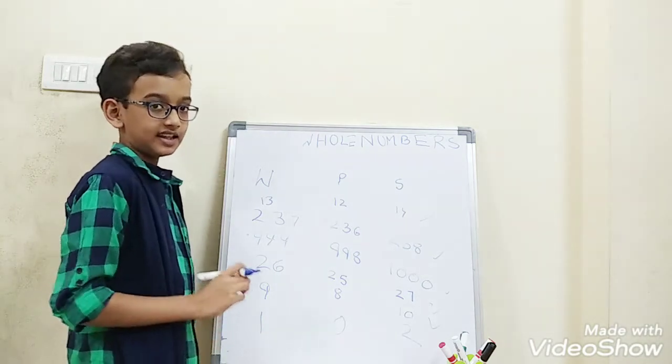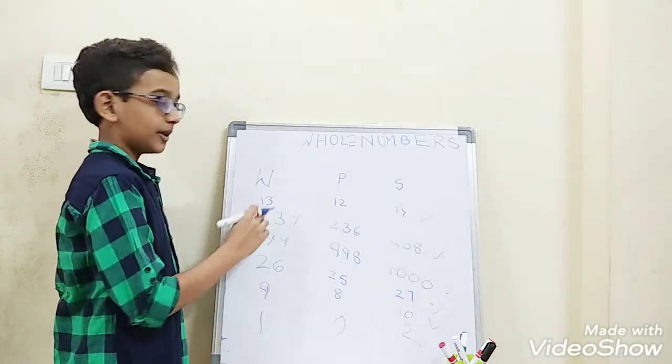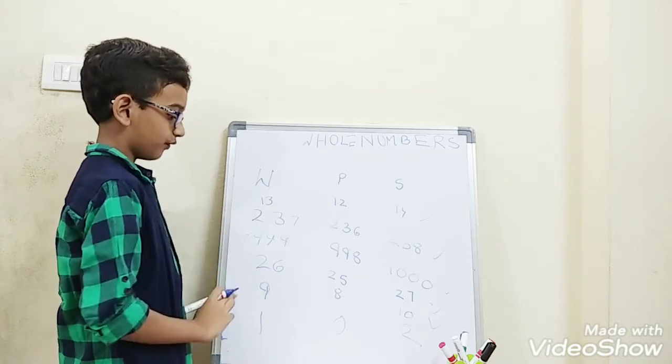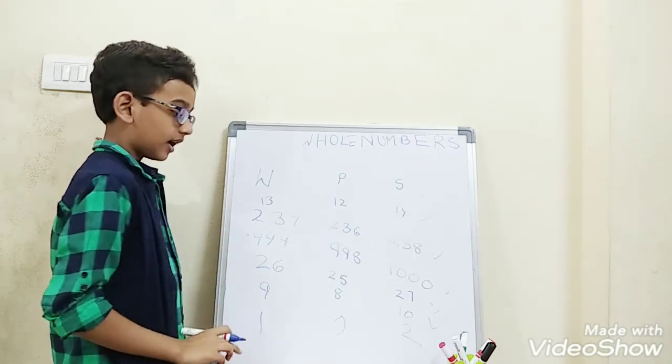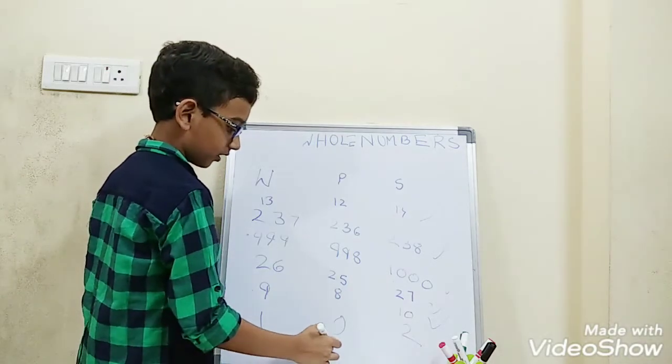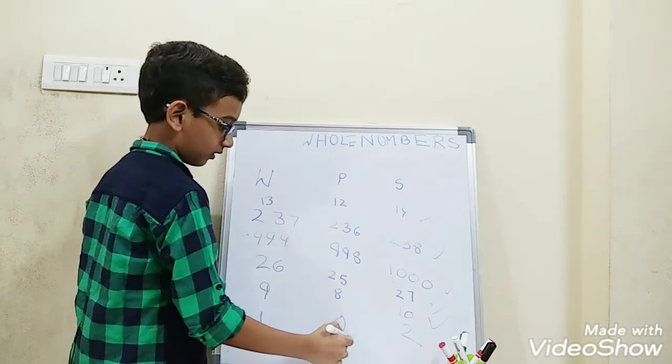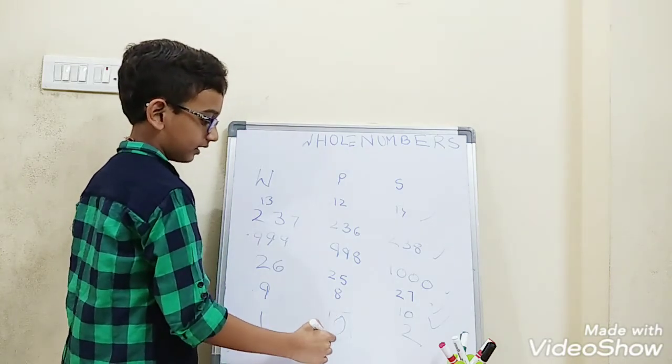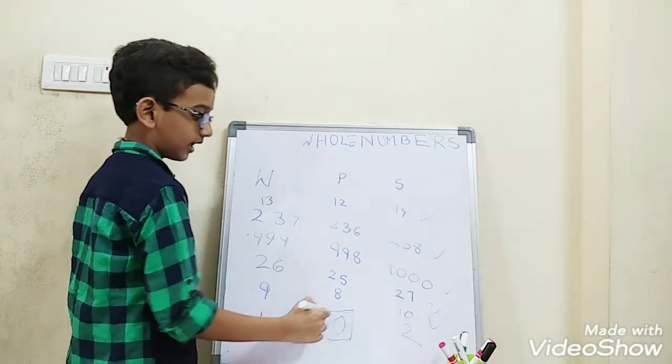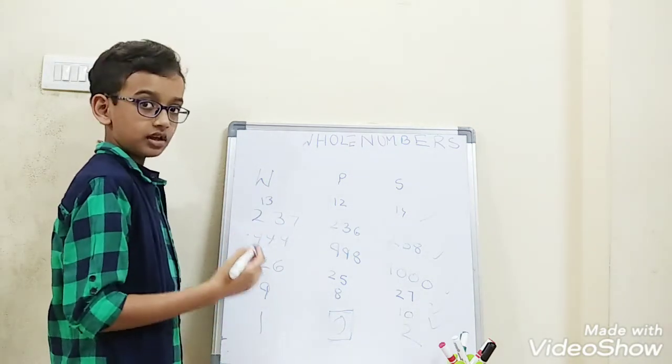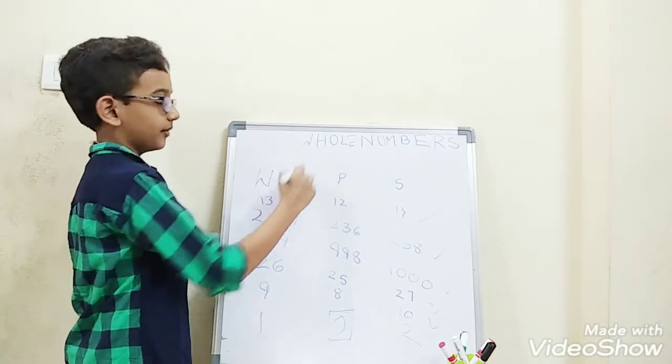Then we will not get any confusion between whole numbers and natural numbers. This is very important to remember, as 0 is the smallest whole number. When 0 is only added, the natural numbers become whole numbers.